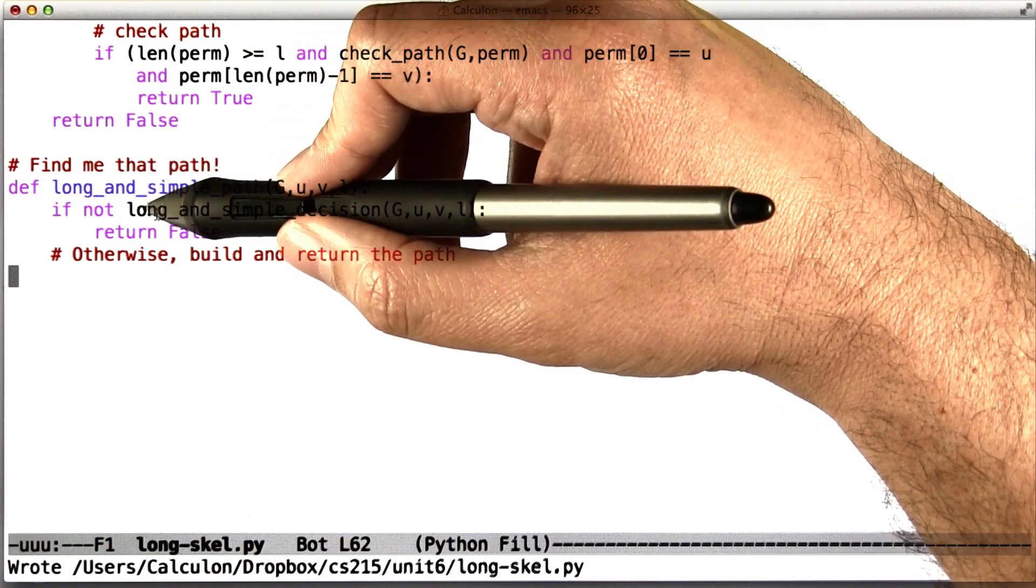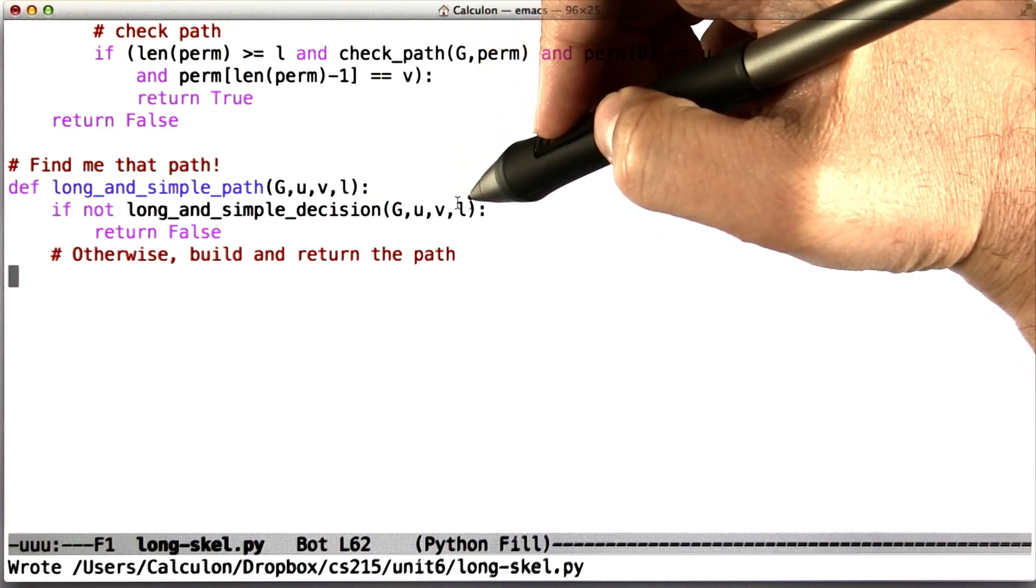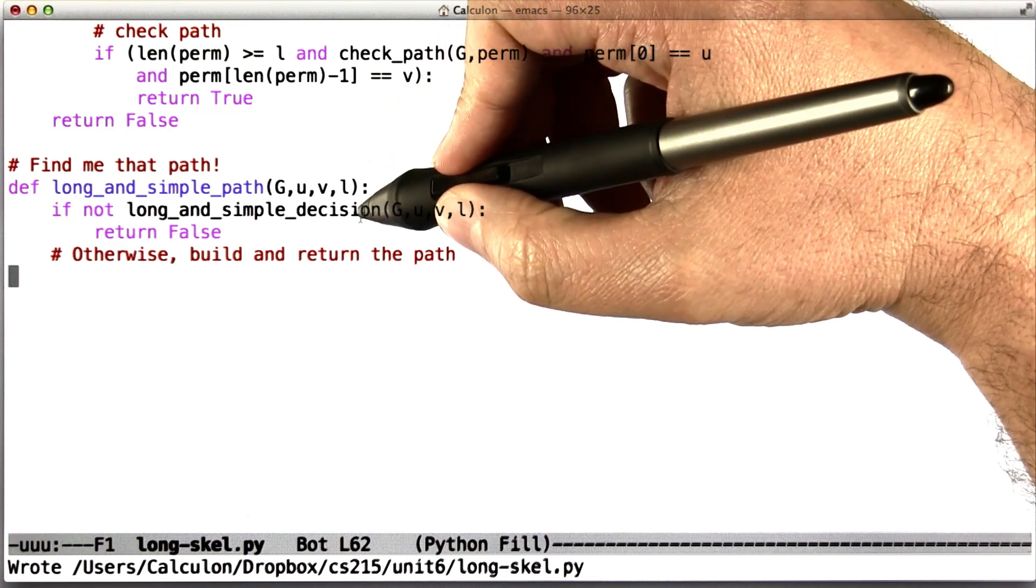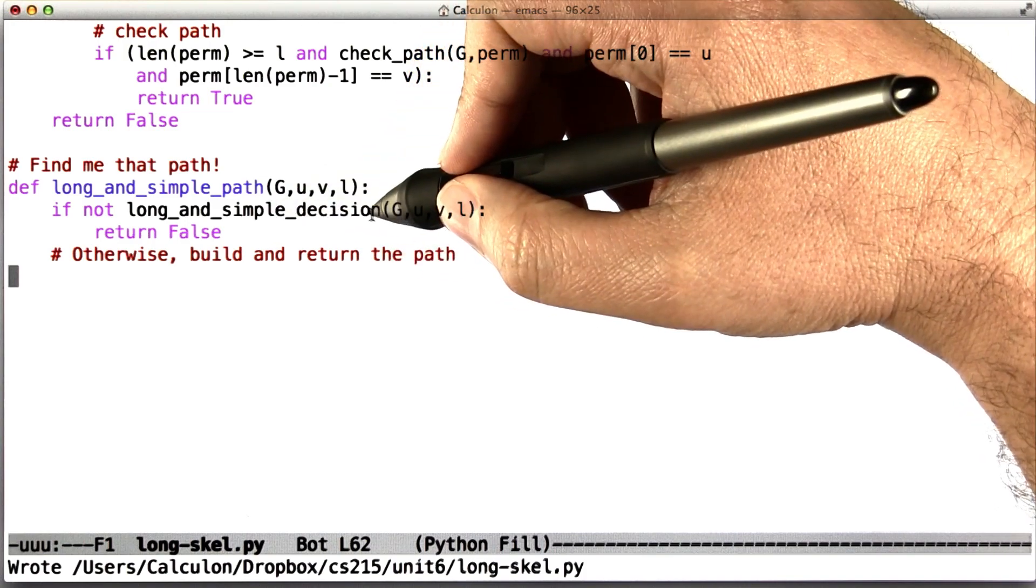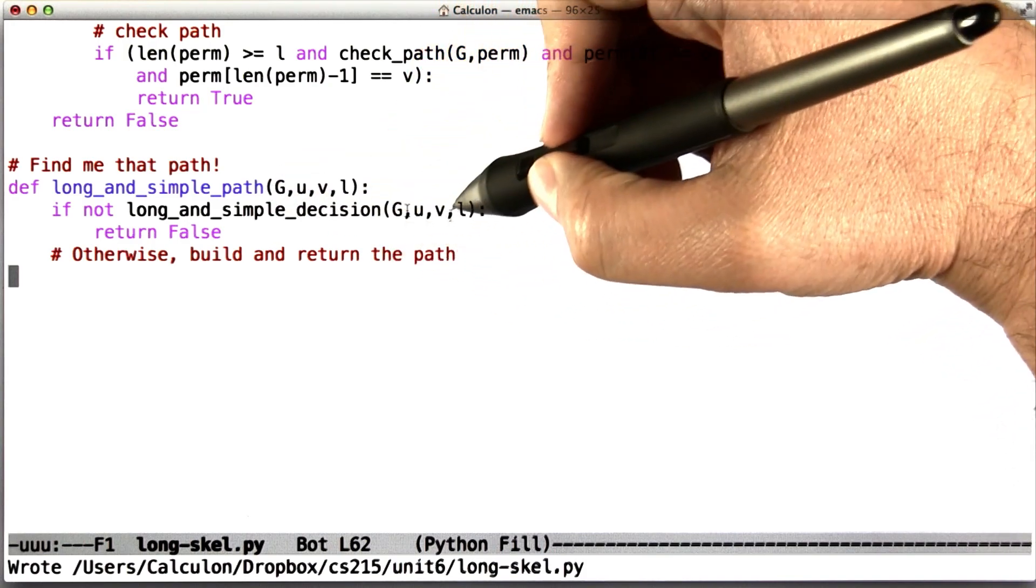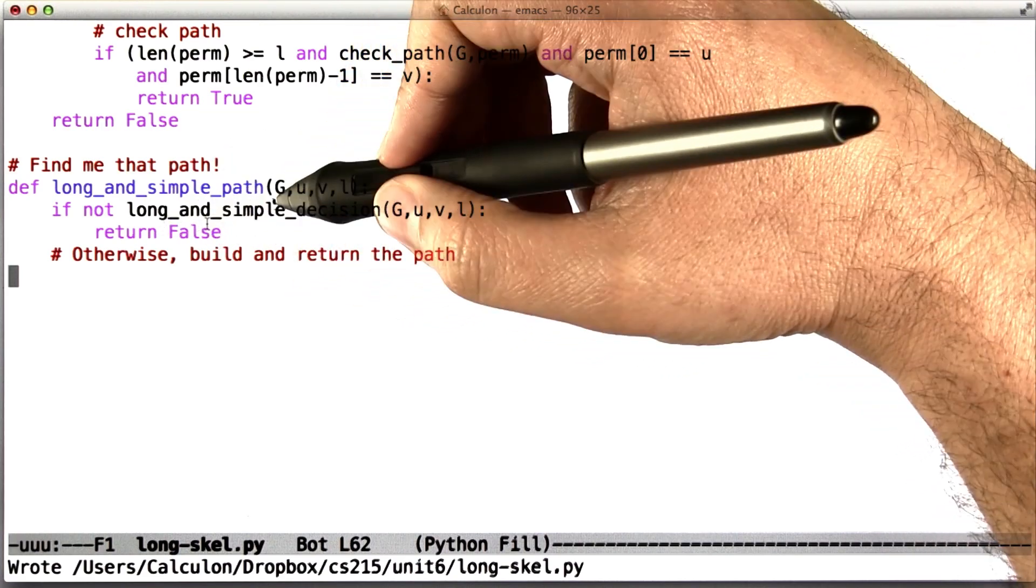So here's a little skeleton to get you started. We call long and simple decision G, U, V, L. And if it's the case that the solution to the decision problem says there is no path of length L or greater from U to V in G, then you don't have to do anything, just return false.